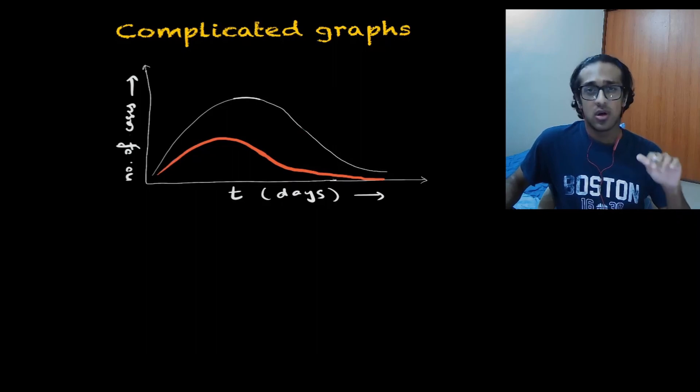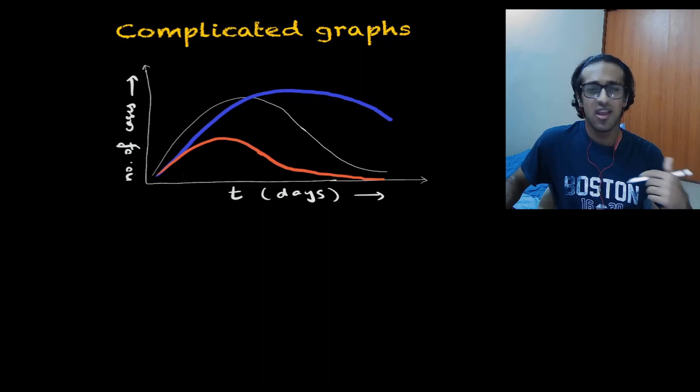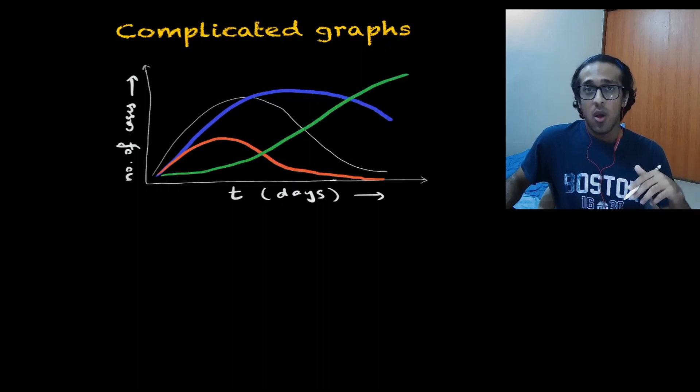The whole term of flattening the curve, a lot of complicated things like doubling rate, reproduction number, and all of these terms have been thrown around in the news very much. But what do these terms mean and are mathematical models extremely important?